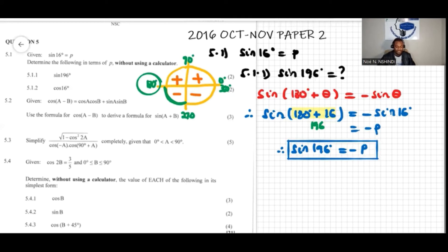And then we have another question here, 5.1.2. The question says cos 16 degrees. So here, we need to find the value of cos 16 degrees.